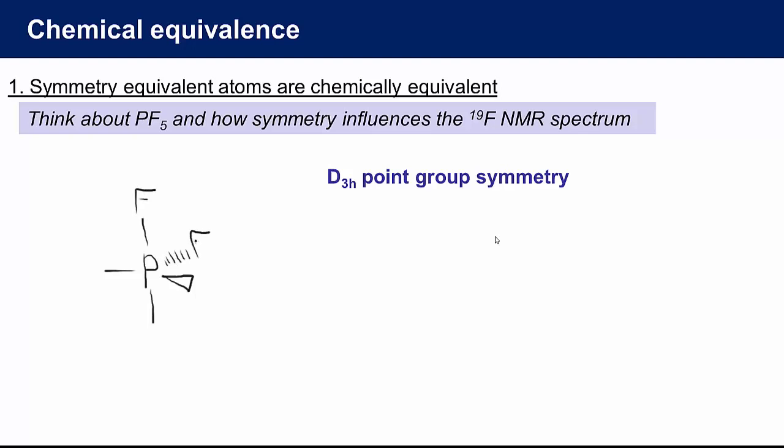These operations leave the molecule invariant or unchanged. All we need to do is spot that there is a threefold axis labelled C3 that interchanges this group of three fluorine atoms. We'll call these three equatorial fluorine atoms. This means that by symmetry each of these three equatorial fluorine atoms is identical and must be chemically equivalent.